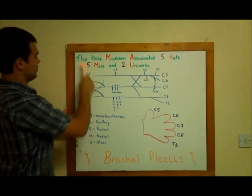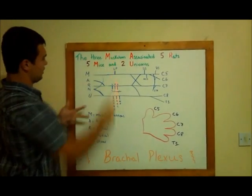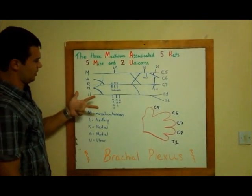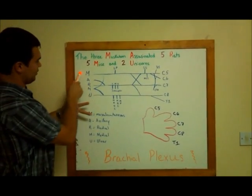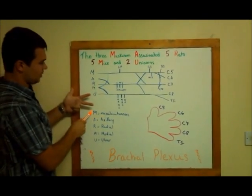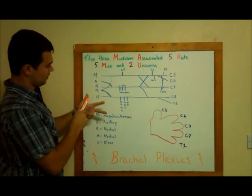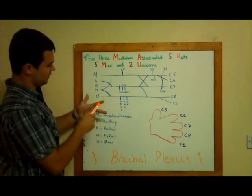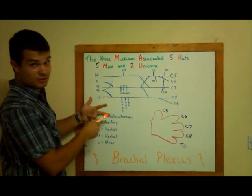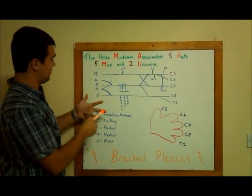So you're going to go to the three musketeers. Your three musketeers is your M — your musculocutaneous. So it's C5, C6, C7 — that's where it originates from.